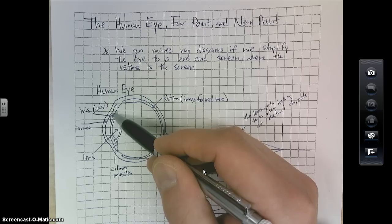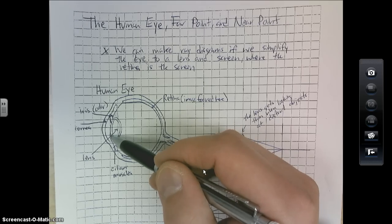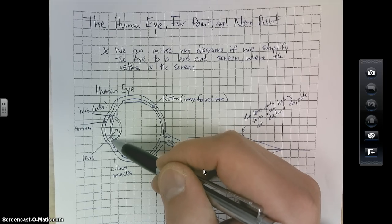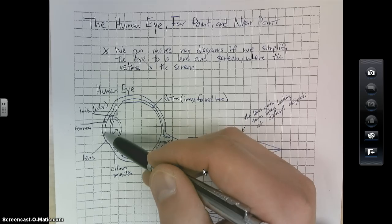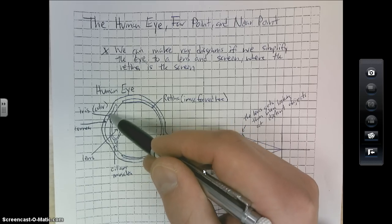Just outside of it here, along this spot and this spot, is known as the iris—that's the colored part of your eye. And then this protective part along the front is the cornea, so it keeps your eye safe.